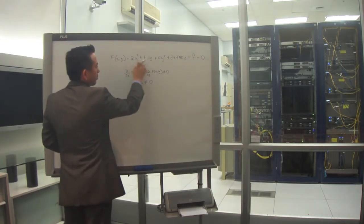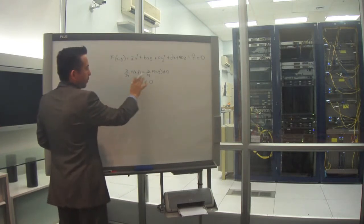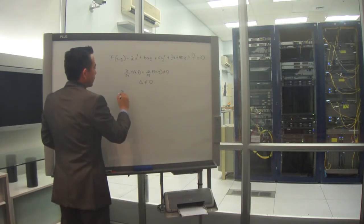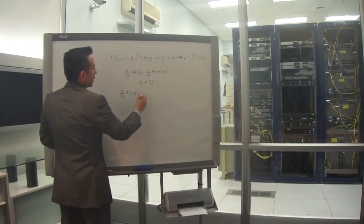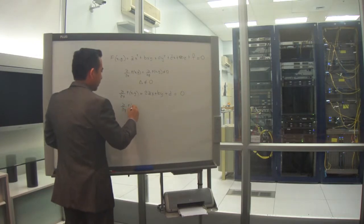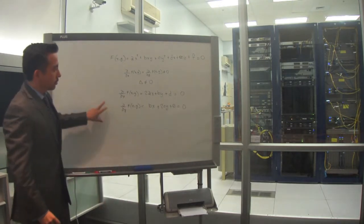I will start by taking the partial derivative of this and then put it equal to zero. The partial of f(x, y) with respect to x is equal to zero, and the partial with respect to y is equal to zero. These are my two partials.